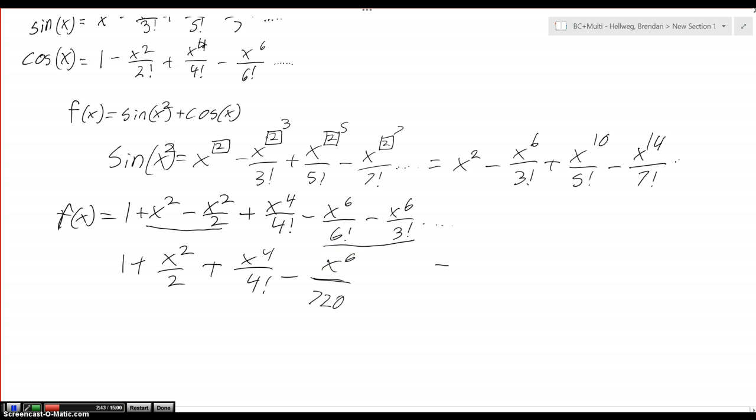But to put this part here into the same terms as this x to the sixth, I'm going to want to multiply both the top and the bottom by 120. So that's going to be minus 120x to the sixth over 3 factorial which is 6 that gets multiplied by 120. So 6 times 120 equals 720.